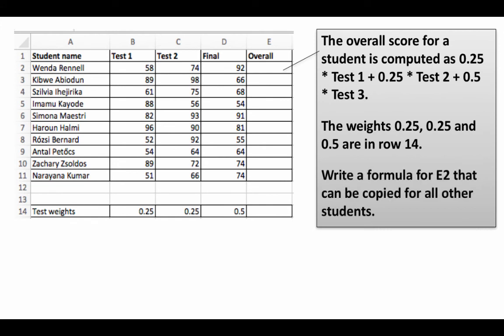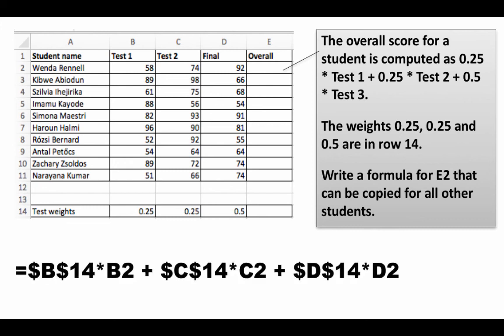So, it's quite easy. So, write a formula for E2 that can be copied for all other students. So, clearly the answer is going to be $B$14 times B2, right? So, $B$14 has this 0.25, $C$14 has this 0.25 and $D$14 has the 0.5. And we are multiplying by B2, C2 and D2 which are all relative addresses. So, you can put that address here. When you copy that formula here and when you copy that and paste it to all of these, the B2, C2 and D2 will change. But the $B$14, $C$14, $D$14 will remain unchanged and it will be perfect.